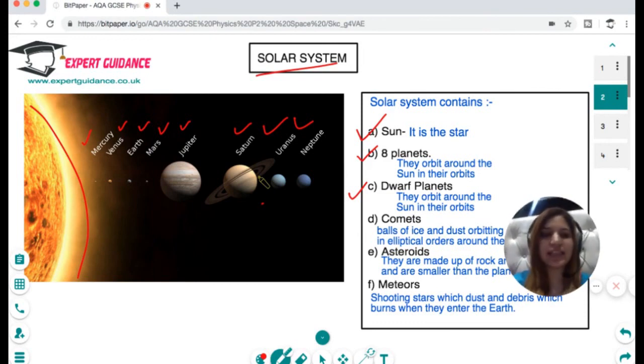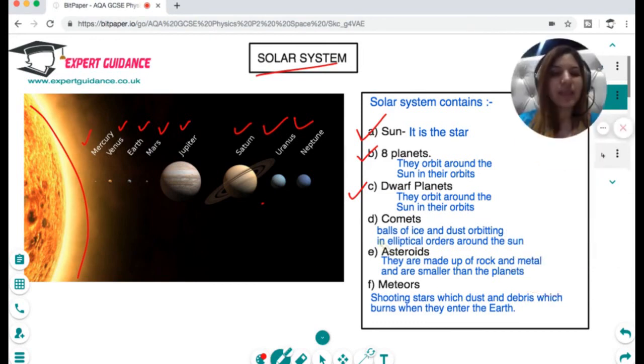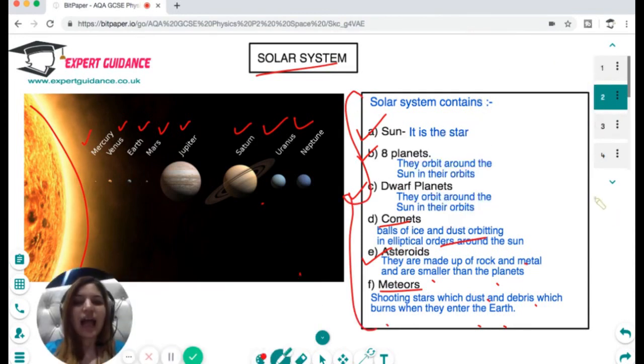Then comets, which are balls of ice and dust orbiting in elliptical orbits around the sun. Then there are asteroids made up of rocks and metals, smaller than planets. And meteors, which are shooting stars - dust and debris which burn when they enter the Earth. You should know the different components of the solar system and what they are exactly.